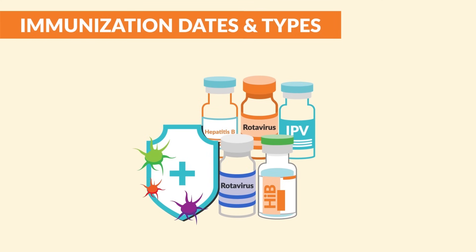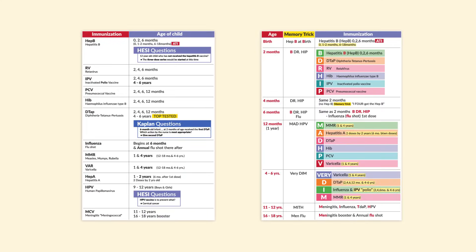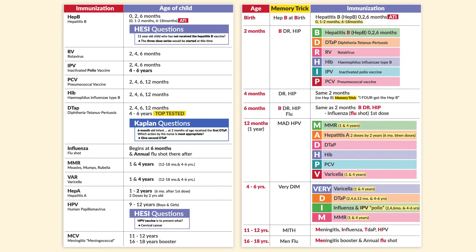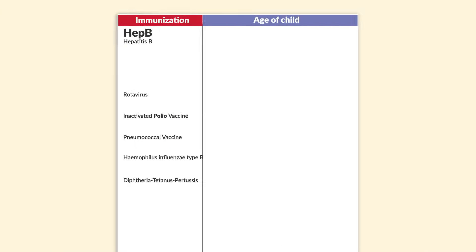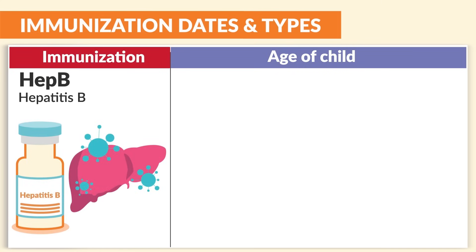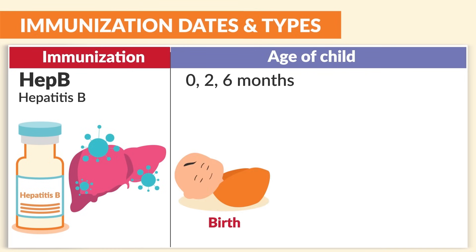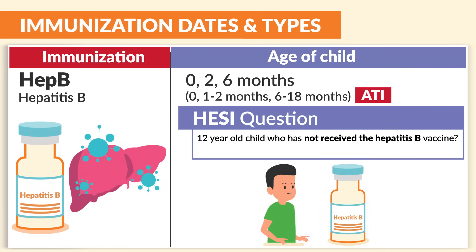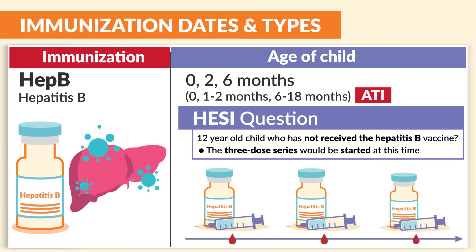Now let's get into the memorization tricks. There are two ways to memorize it: either by immunization itself, which we'll cover first, or by the age of the child, which is personally believed to be the best way. Starting with the immunization list: Hep B (hepatitis B vaccine) is given at 0, 2, and 6 months old, with a window between 6 to 18 months per ATI. HESI mentions a 12-year-old child who has not received the hepatitis B vaccine — the three-dose series would be started at that time.